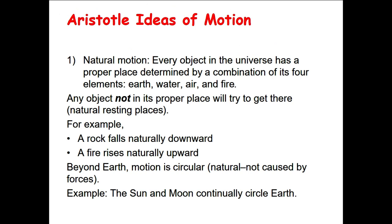According to Aristotle, natural motion comes naturally without a force, without pushing or pulling. Every object in our universe has a proper place which is determined by its composition of the four elements: earth, water, air, and fire. So any object not in its proper place will try to move to its natural place. This motion is called natural motion.